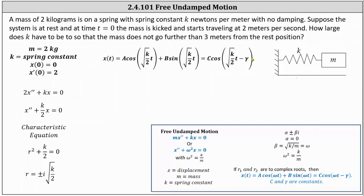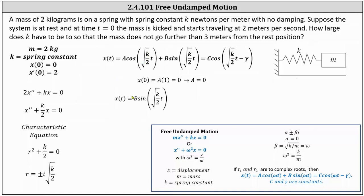When solving an initial value problem it's almost always better to use the general solution as a sum of cosine and sine, which we will do. Now we need to determine a and b using the initial conditions. Using x of zero equals zero, we substitute zero for t and set the equation equal to zero. We have a cosine zero which is one, plus b sine zero which is zero, giving us a times one equals zero, and therefore a equals zero. So the cosine term simplifies out and we're left with x of t equals b times sine of the square root of k divided by two times t.